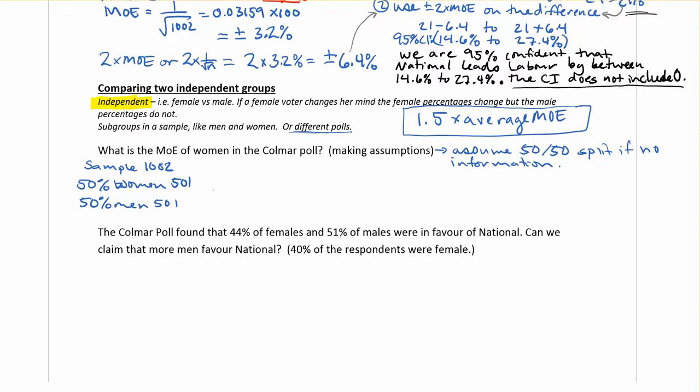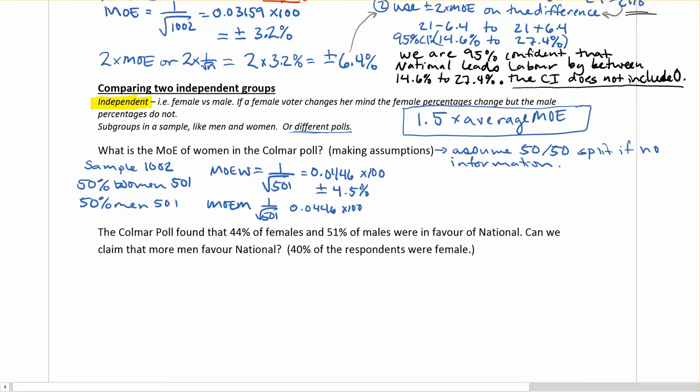In a situation like this, if they are the same, we'll find out that the average is just the same as one of them. But to go through that process, the MOE for the women is going to be 1 over the square root of 501, which is to get you 0.0446. And we times by 100 to get to a percentage, so we're going to get plus or minus 4.5 if we round. And the MOE for the men would be the same, 1 over the square root of 500, and again, 0.0446 times it by 100 to get your percentage, and you'd get plus or minus 4.5 as well.